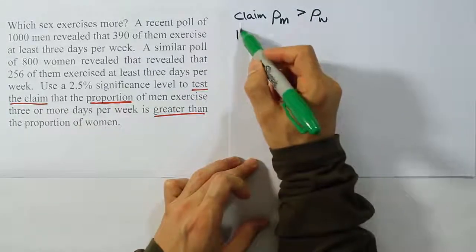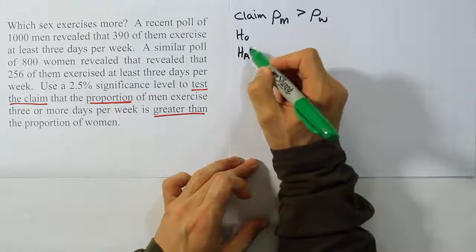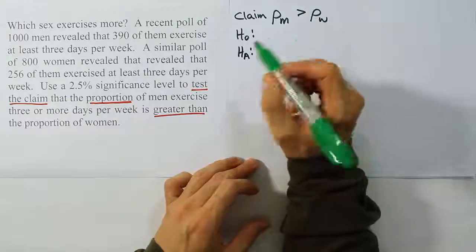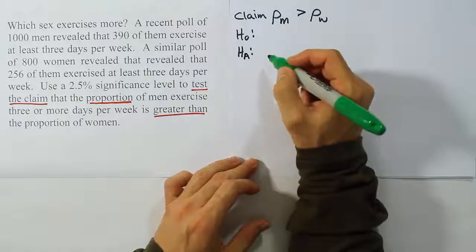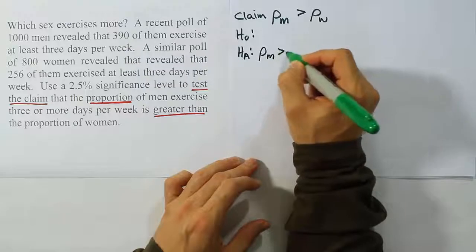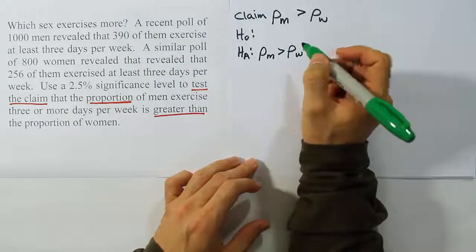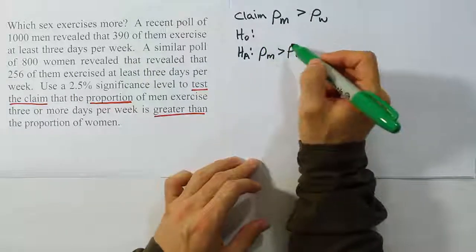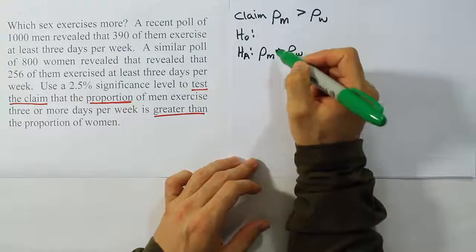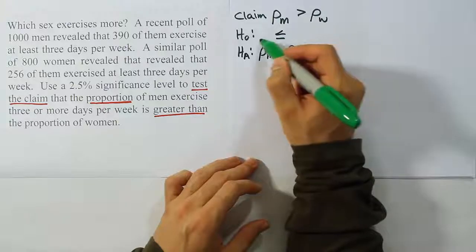Now let's set up H0 versus HA. When we look at the claim, we see it has a greater than symbol, which is one of the HA symbols, so the claim becomes HA. H0 has to express the opposite idea, so if HA says greater than, H0 will say less than or equal to.